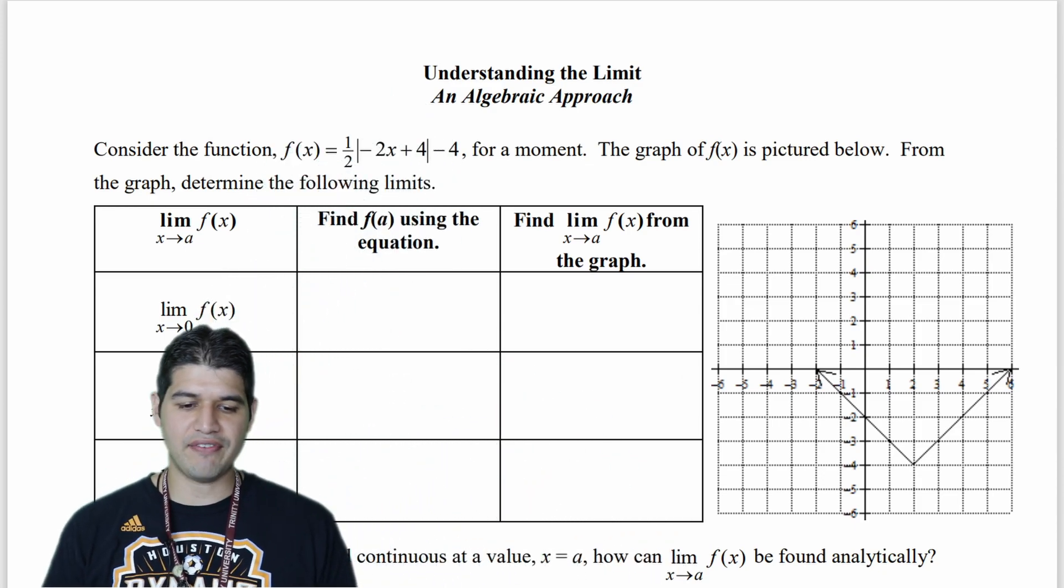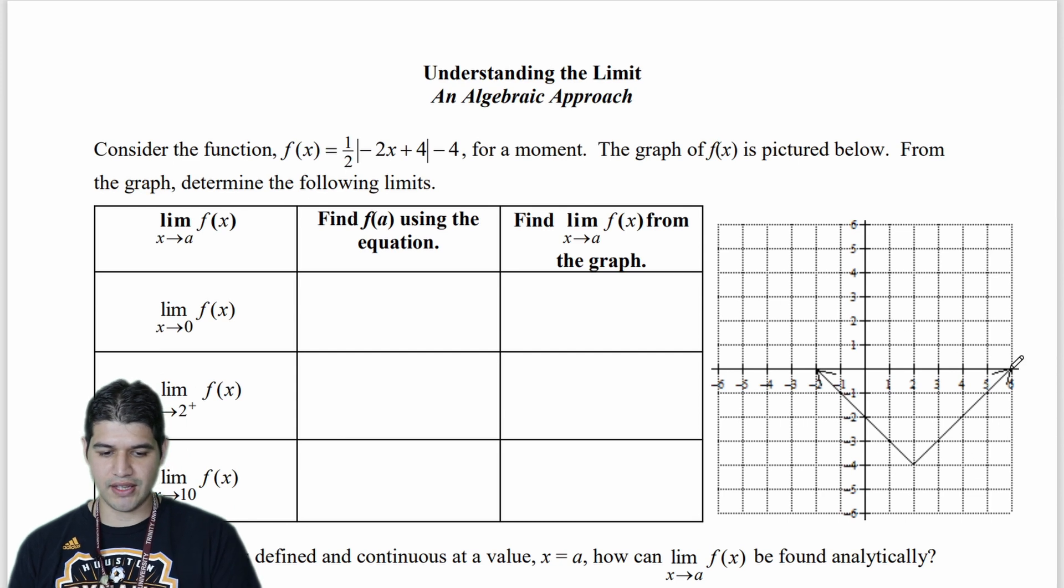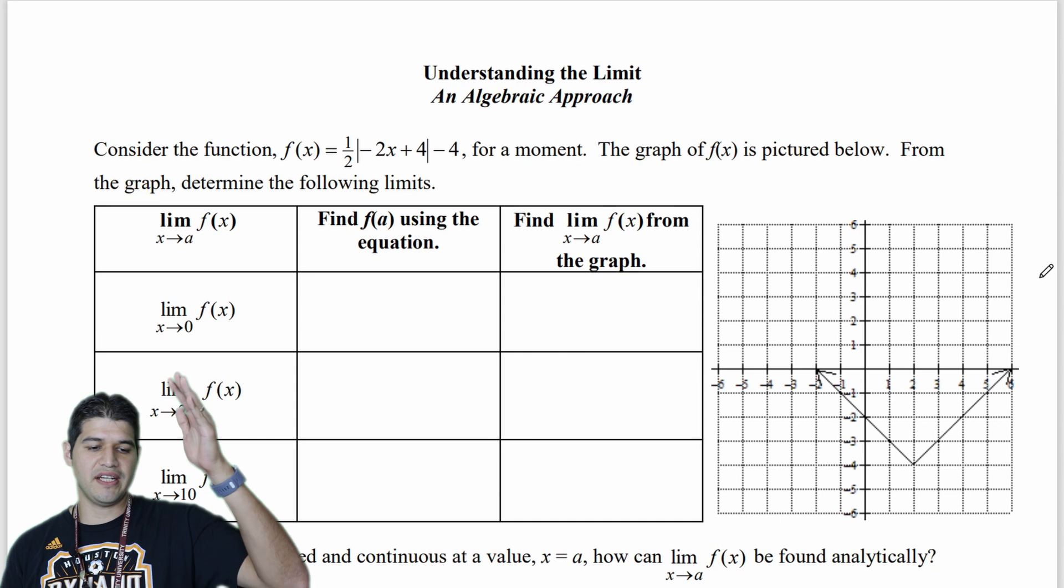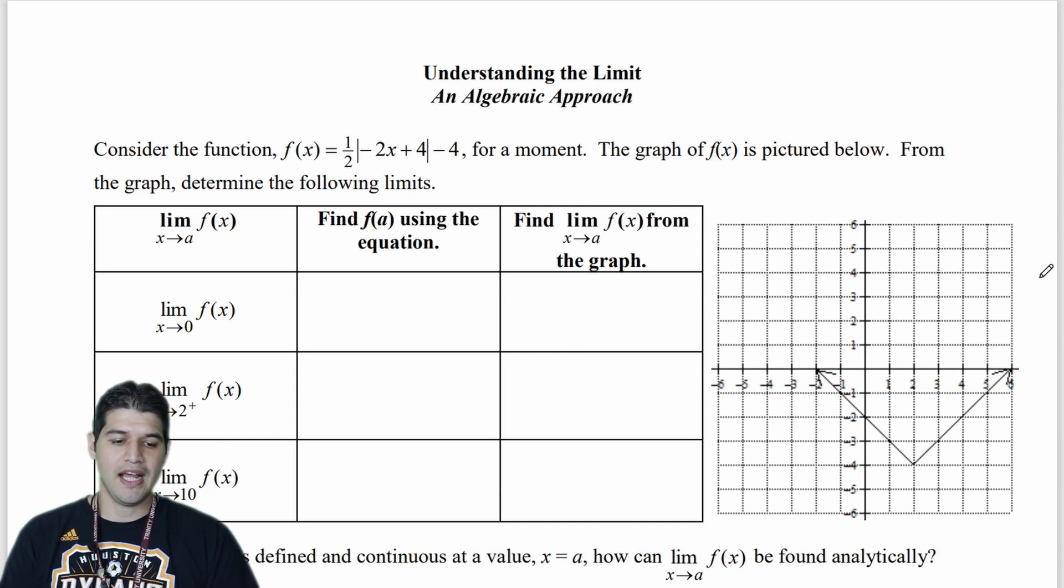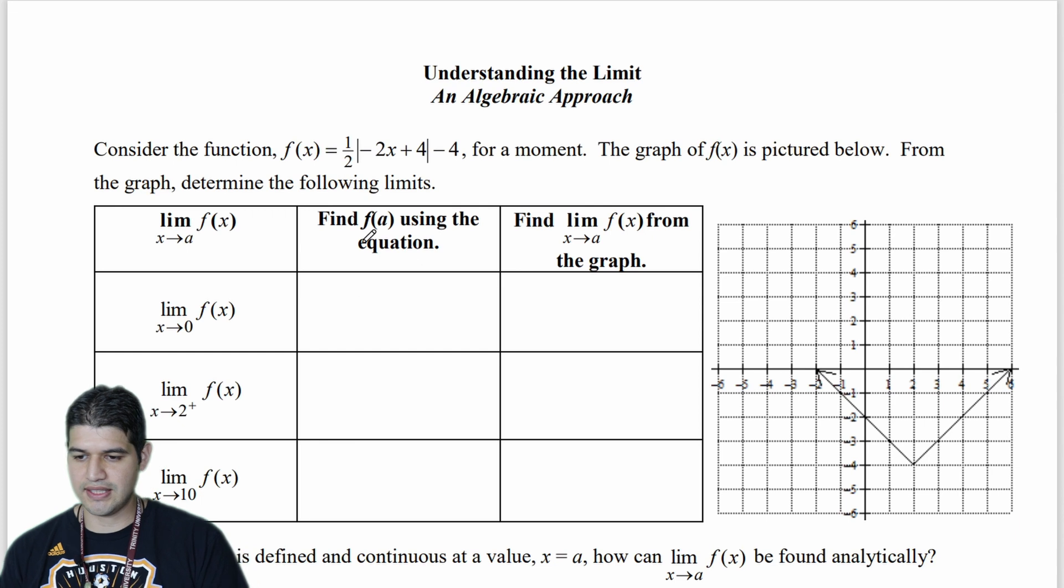So we're given this function, and we have it graphed over here on the right side right there. And we're going to do several things. First, we're going to find f of a using the equation, and then we're going to find the limit of f of x as x approaches a using just the graph like we learned about last time. So f of a using our equation, let's write this down.